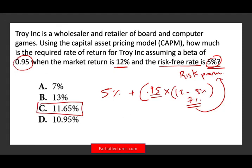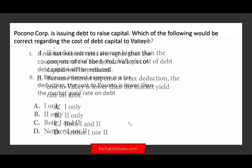This problem could be given to you as a standalone question, or as part of computing the weighted average cost of capital, where cost of equity is one component. Therefore, when this company wants to raise equity — when it wants to issue equity — their cost is 11.65%, and they have to invest in a project that earns more than that.